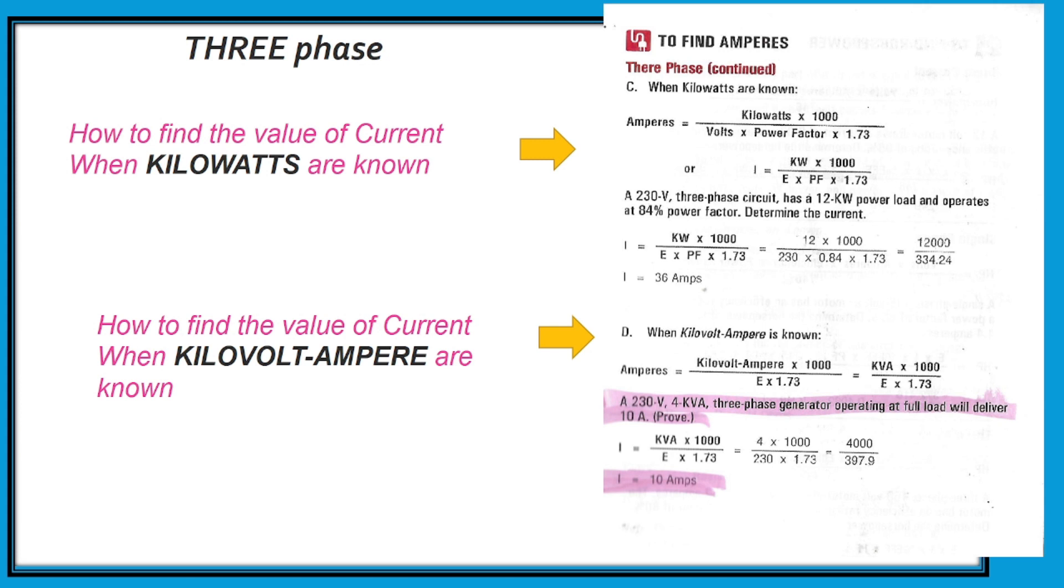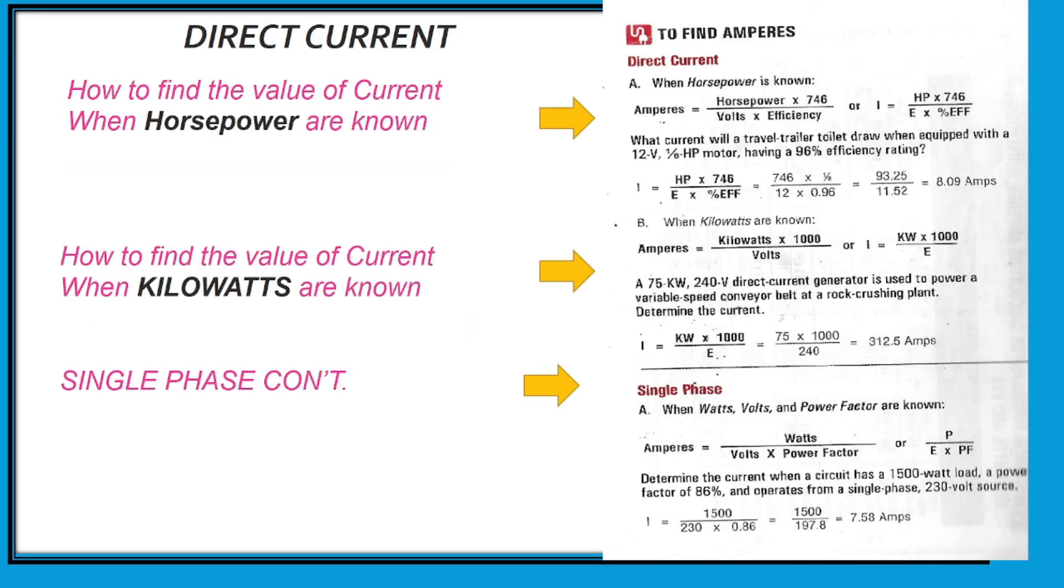This is for single phase and this one is for three-phase. The only difference for single phase and three-phase is square root. The next one is direct current. If you are dealing with direct current, you can also watch this one. We have here the continuation of single phase when you are going to look for amperes when volts and power factor are known.